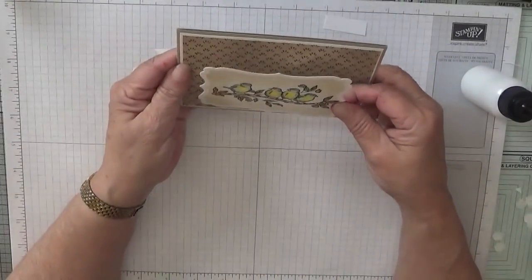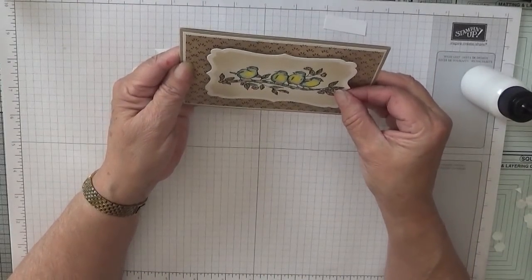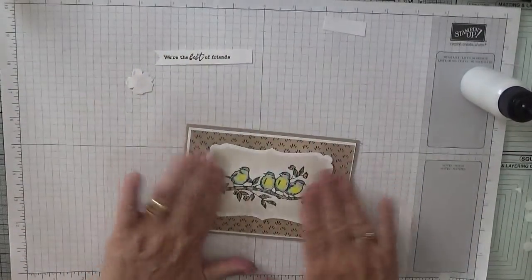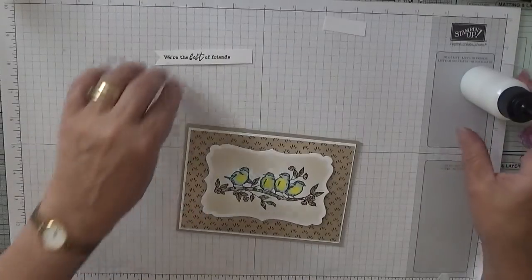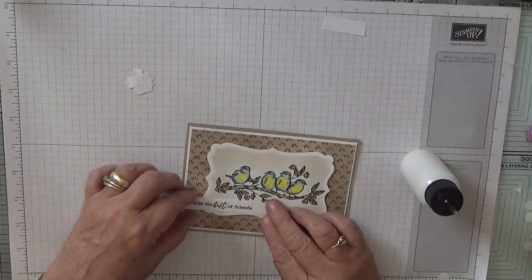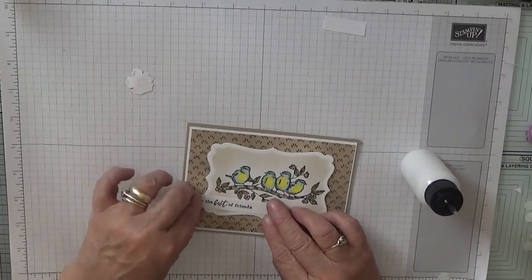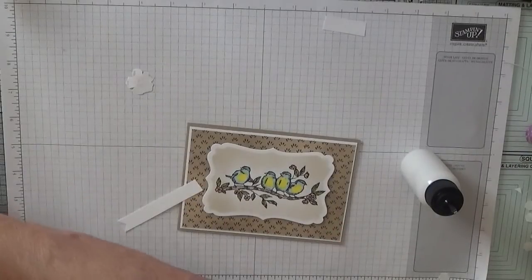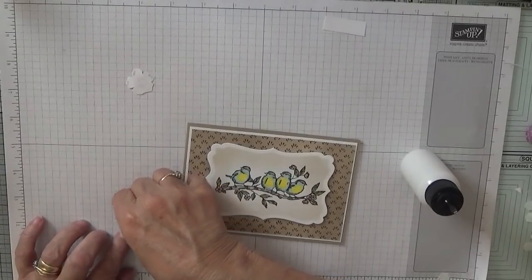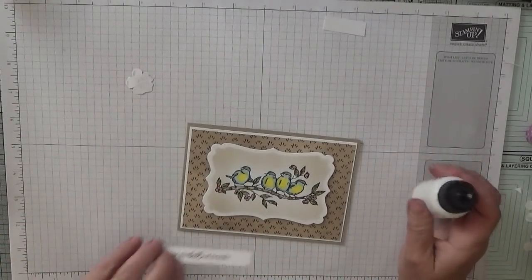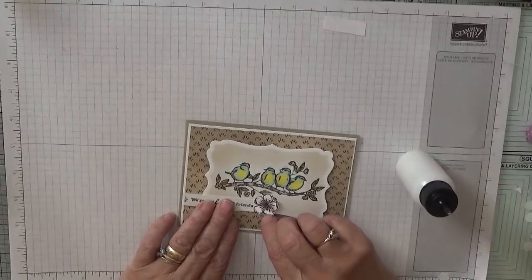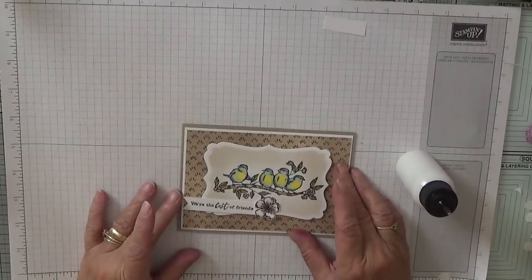So I am going to pop that right in the middle there, nice and straight. Press it down now. Then I'm going to glue that on there and I'm going to add a tiny dimensional to the end. And that flower will sit just there - that's nice.